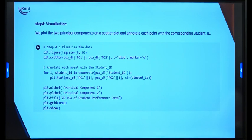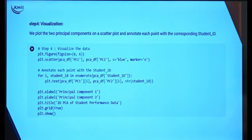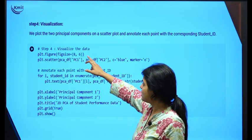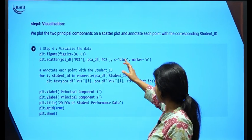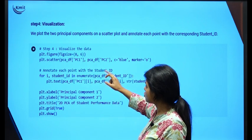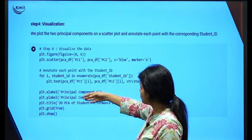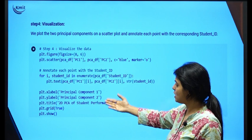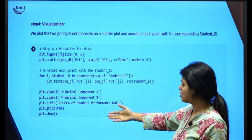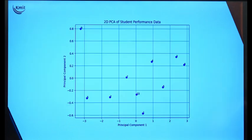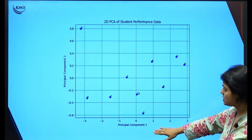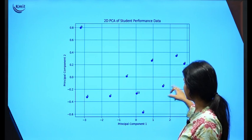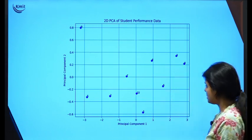For visualization, I plot the two principal components in a scatter plot and annotate each point with the corresponding student ID. I use a figure size of 8 by 6, plot PCA 1 and PCA 2 with blue markers, label the x-axis as PCA 1 and the y-axis as PCA 2, and set the title to '2D PCA of Performance Data'. The resulting graph shows student IDs distributed across PCA 1 and PCA 2 axes.